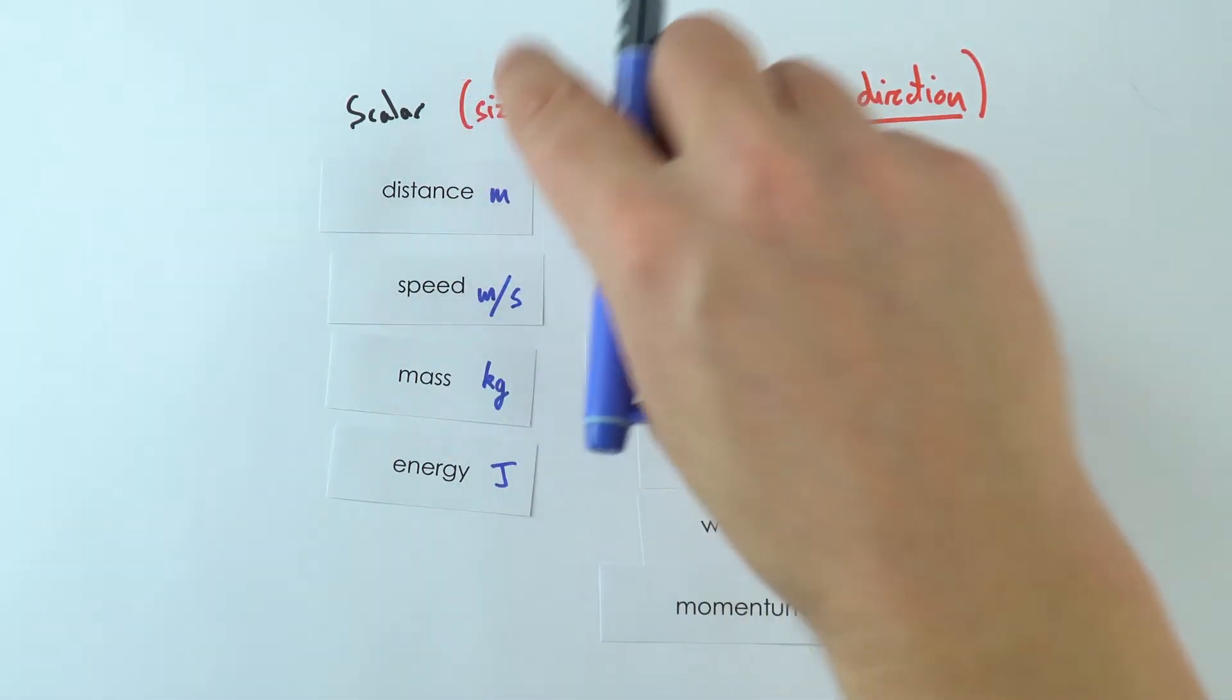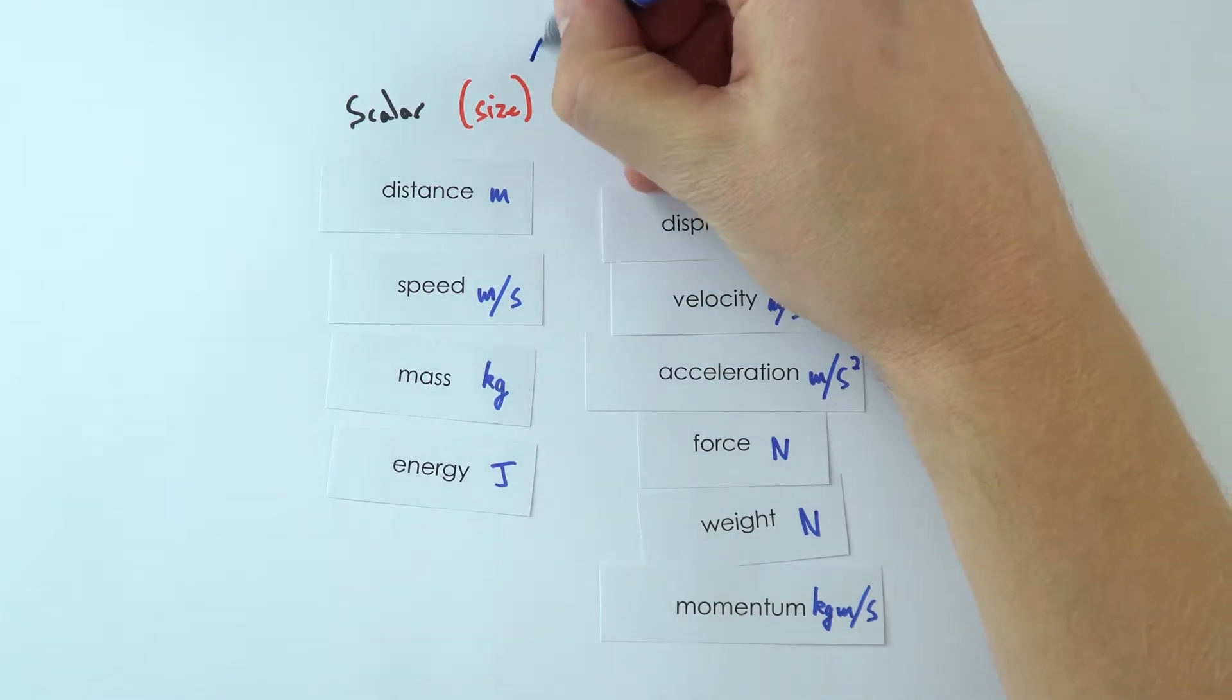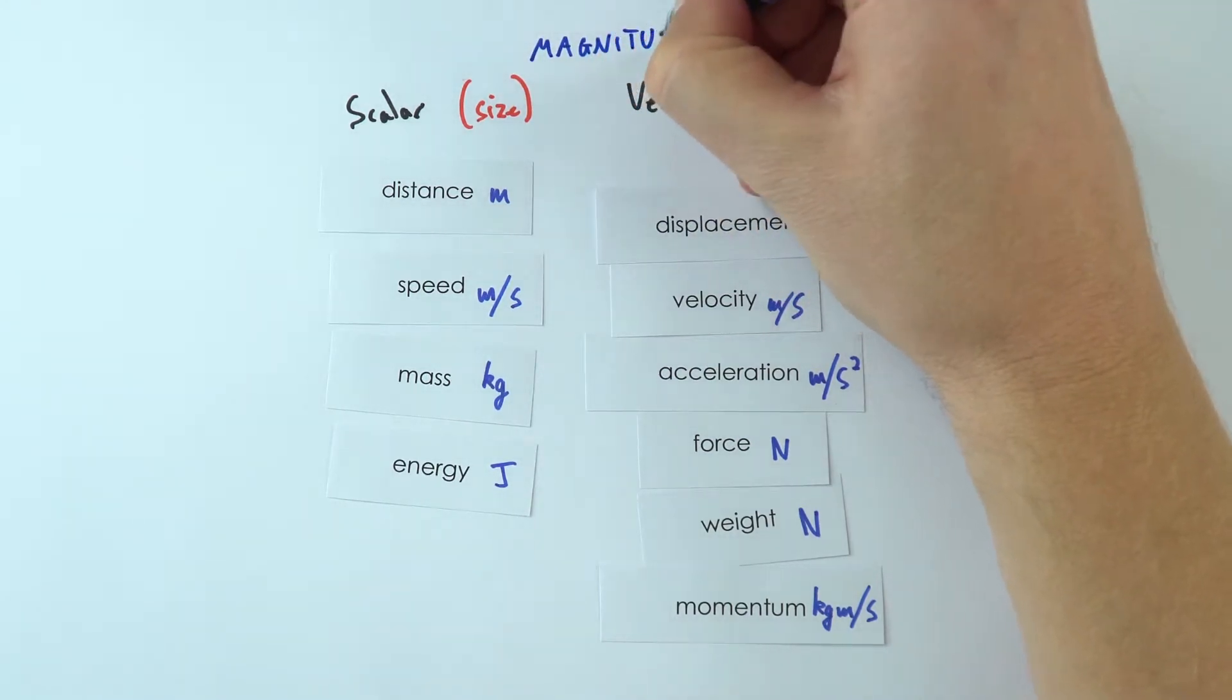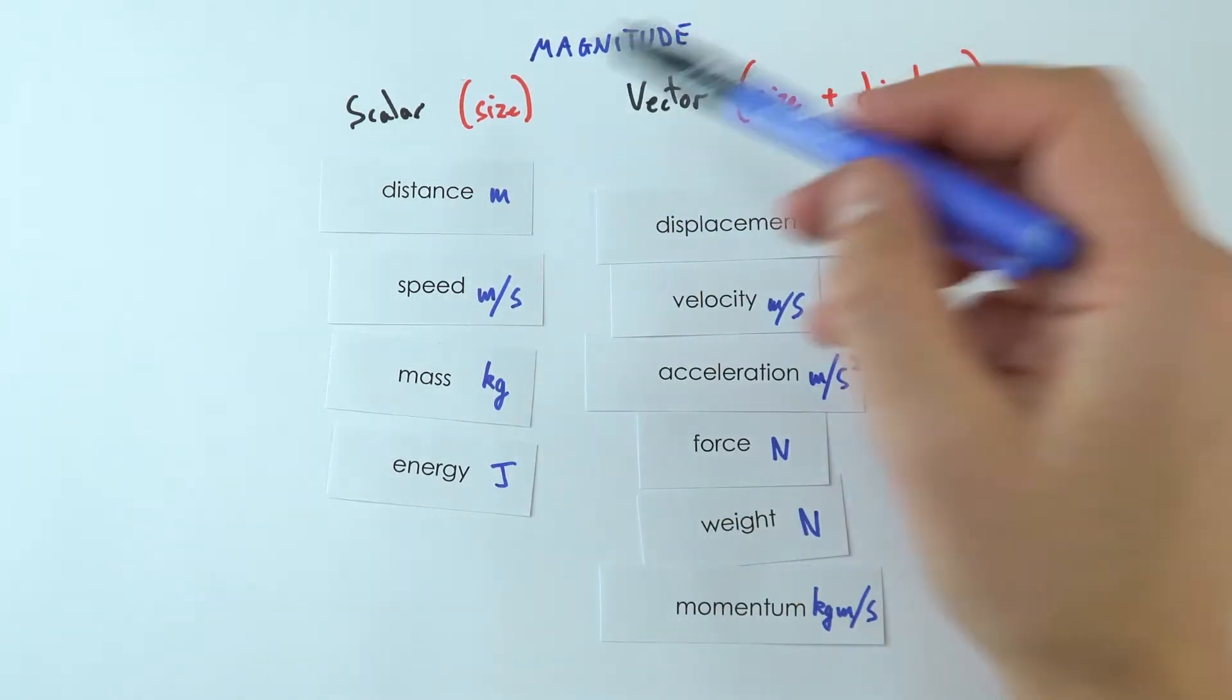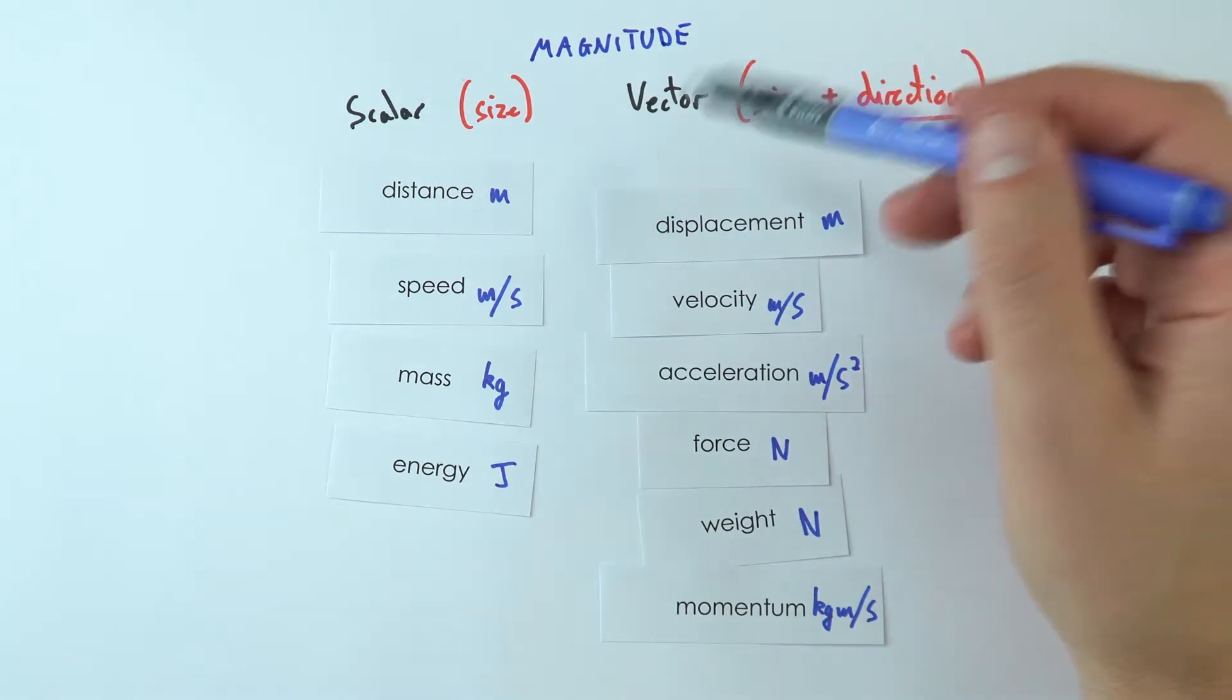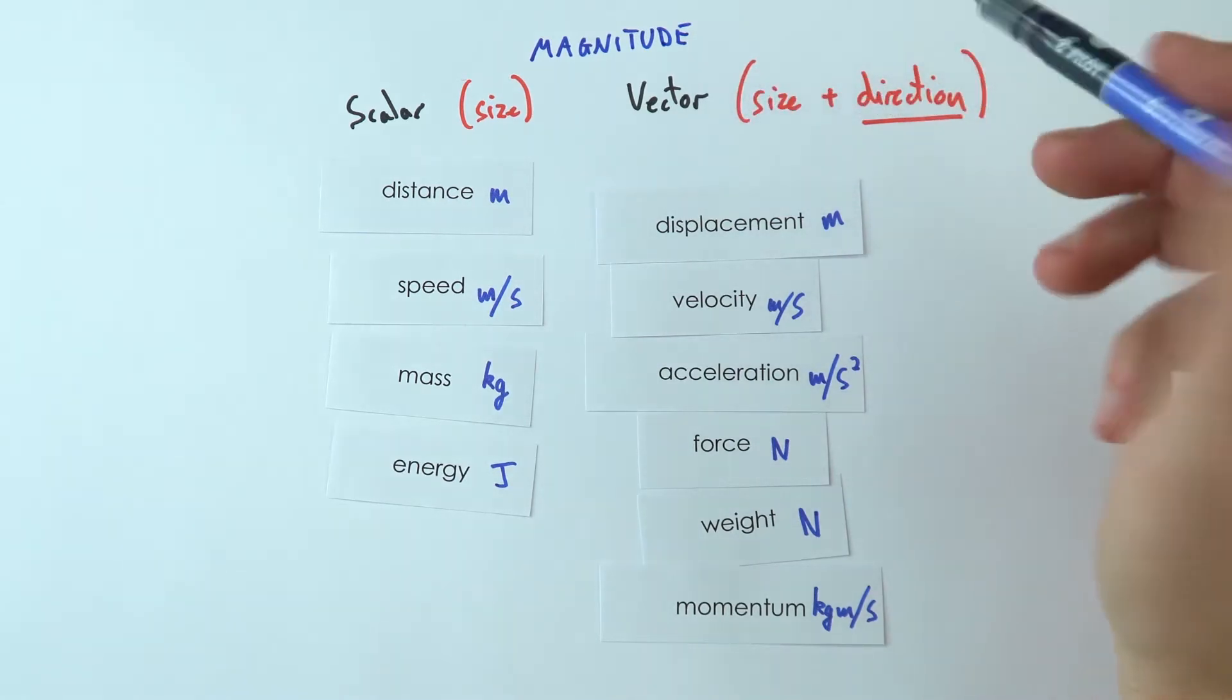Scalars just have a size, and another word for size is magnitude - this is just a posh word for saying how big something is, so we can give it a number. So magnitude is just another word for size. Vectors, they depend on the magnitude and the direction that that's acting in.